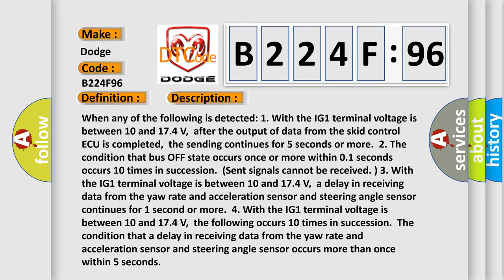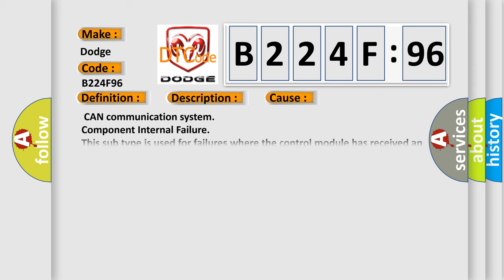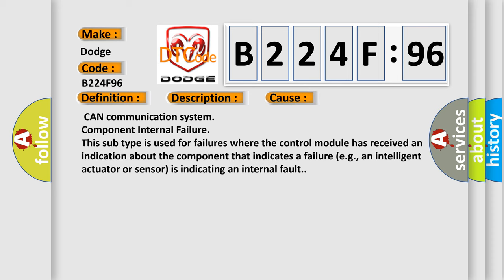This diagnostic error occurs most often in these cases: CAN Communication System Component Internal Failure. This subtype is used for failures where the control module has received an indication about the component that indicates a failure, e.g., an intelligent actuator or sensor is indicating an internal fault.